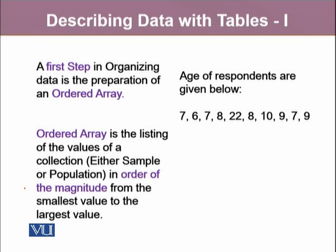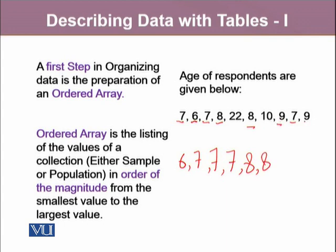In our data discussed previously, we have ages of respondents: 7 years, 6 years, 7 years, 8 years, 22 years, and so on. To arrange this into an ordered array, we first locate the minimum observation, which is 6, and note it down as the first value. Then comes 7 — noted down as many times as it appears — then 8, which comes twice, then 9, which also comes twice, then 10, and lastly 22.